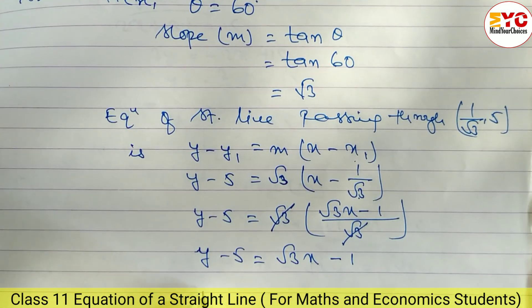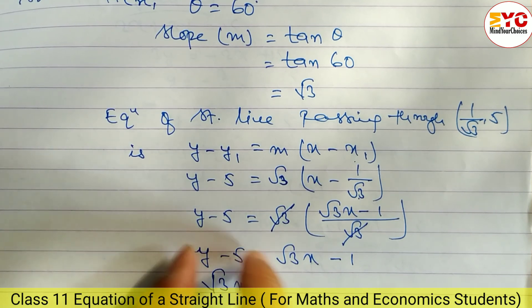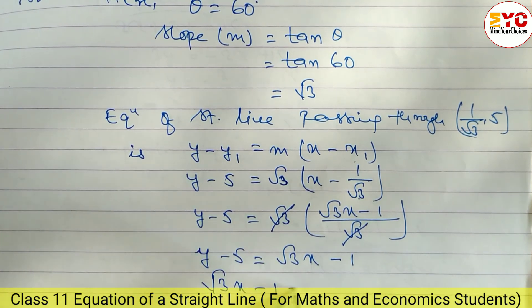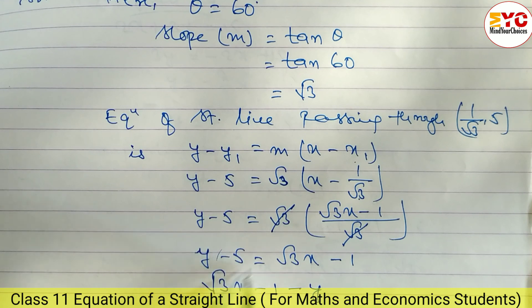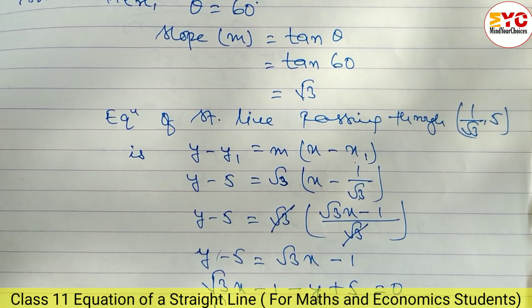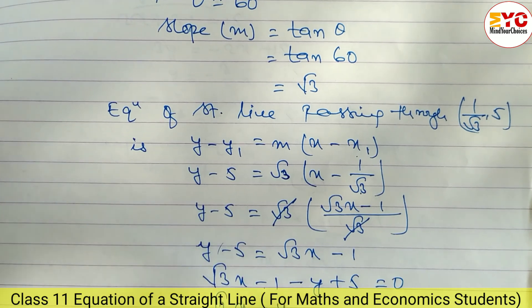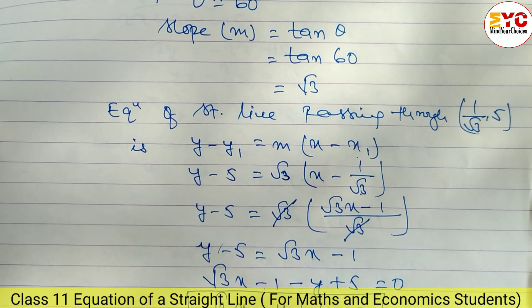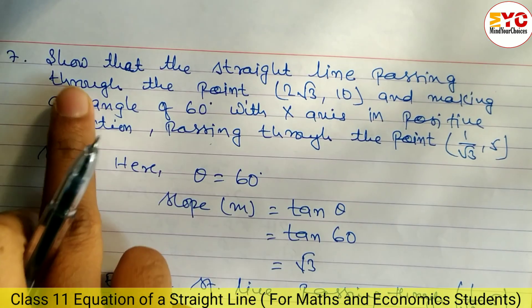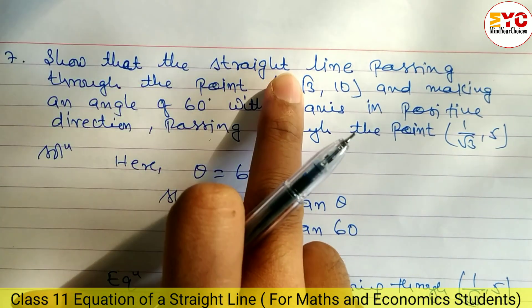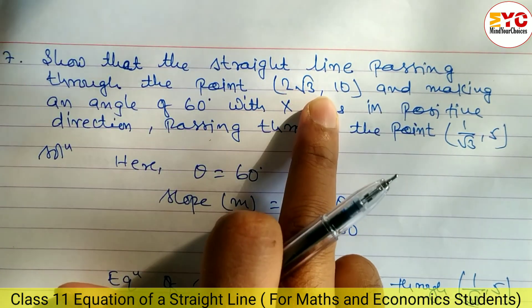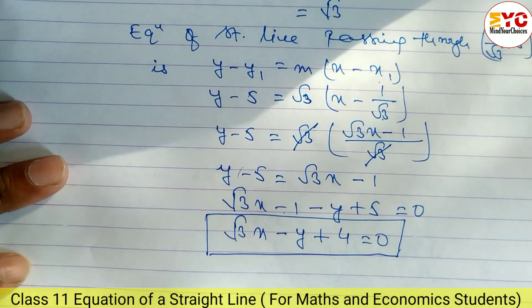Taking all terms to one side: √3·x - y - 1 + 5 = 0, which gives √3·x - y + 4 = 0. This is the required equation of the straight line.